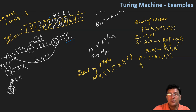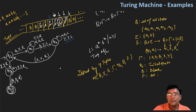After that, Q0 denotes the initial state. And then B denotes the blanks — if you look at the tape, there will be an infinite number of blanks. And then F denotes the set of final states. In this case, the final state is QF. So QF is the final state.